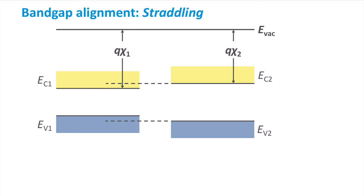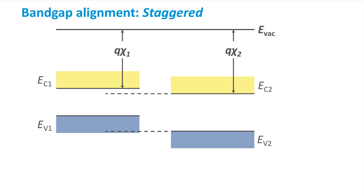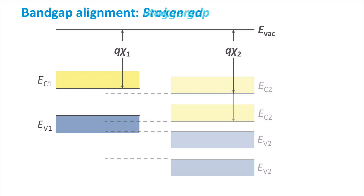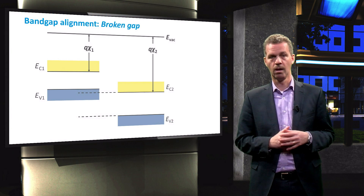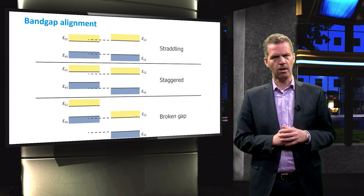We distinguish three types of band alignment in the heterojunction. The first type is called straddling, which means that the high band gap material encloses the band gap of the low band gap material. The second type is called staggered, where the conduction band edge of one material is positioned inside the band gap of the other material, while the valence band is below the valence band of the other material. Finally, the last type is called broken gap, where the band gaps are completely misaligned, meaning the conduction band edge of one material is below the top of the valence band of the other material.